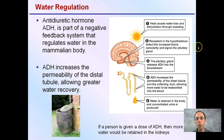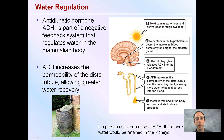If we're outside, heat will cause water loss through dehydration through the process of sweating. Receptors in the hypothalamus, which is located in the brain, detect the increased blood osmolarity and signal the pituitary gland. It's the pituitary gland, located right here, that will release ADH into the bloodstream.